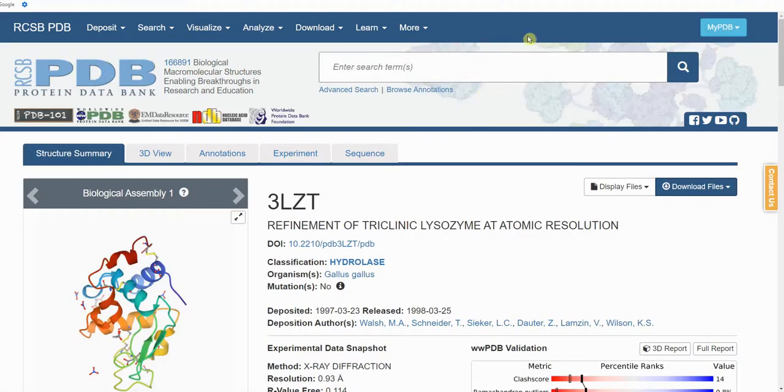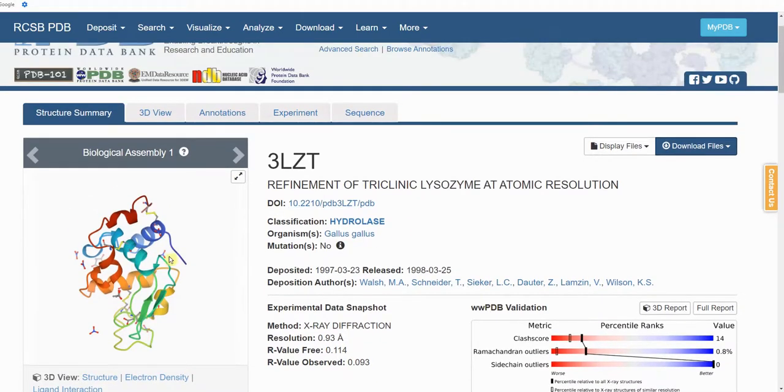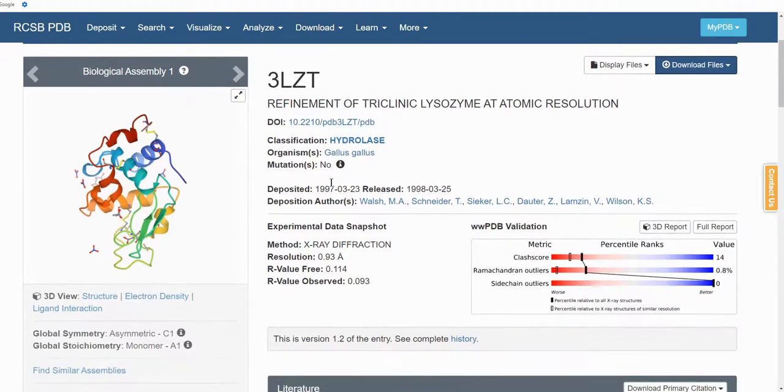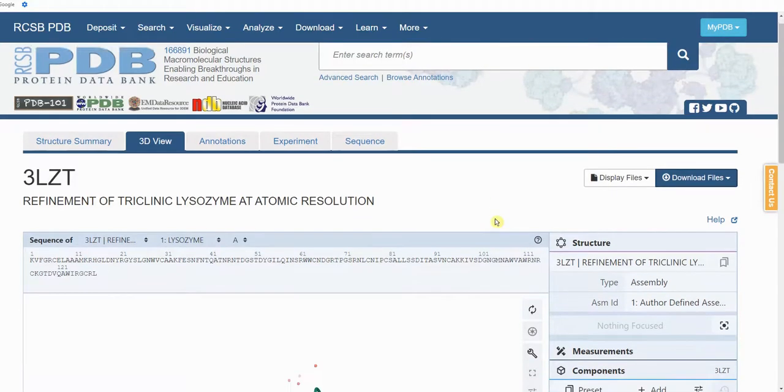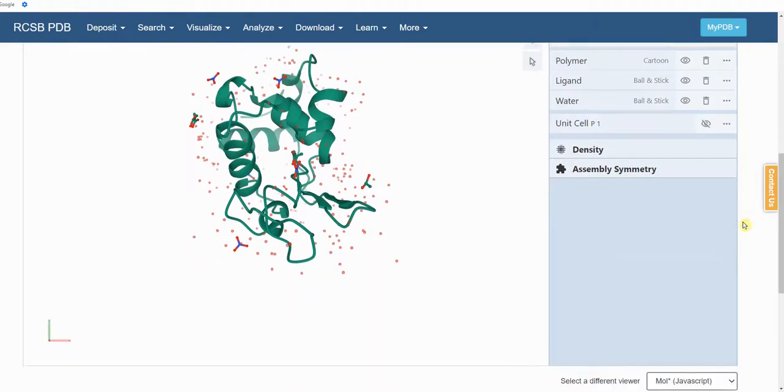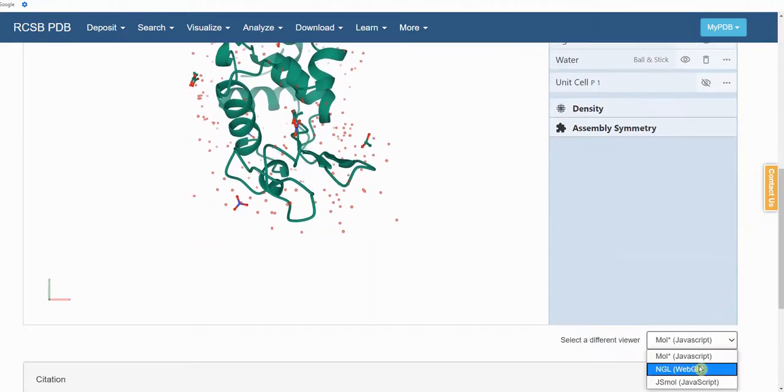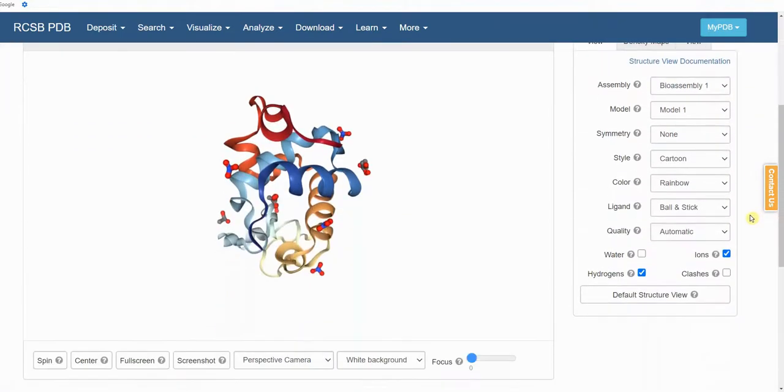And here is the protein page. In the upper left corner is the structure. Let's click on the structure link below the image. And I am going to change our view by scrolling to the bottom to the NGL viewer. There are multiple ways to visualize proteins.